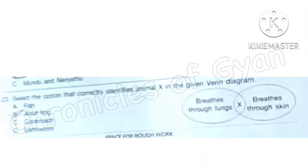Question 23: Select the option that correctly identifies animal X in the given Venn diagram. This is animal X and the conditions are breathes through lungs and breathes through skin. The options given here are option A fish, option B adult frog, option C cockroach and option D earthworm. So the correct answer is option B, adult frog.